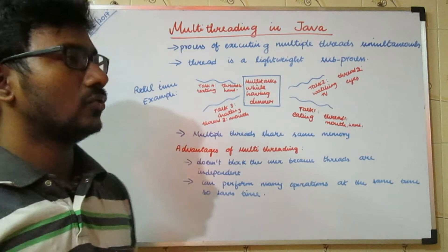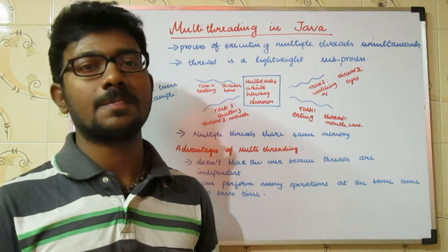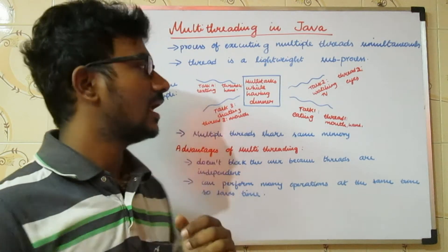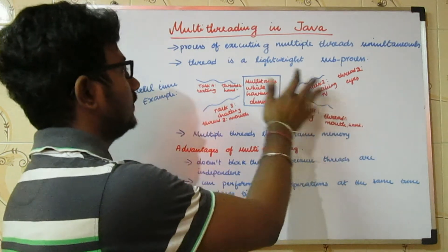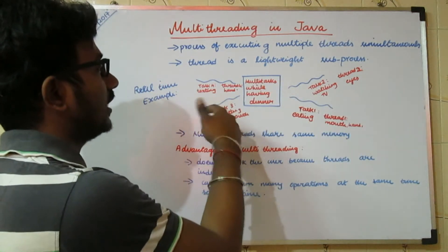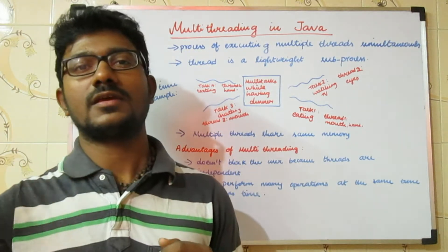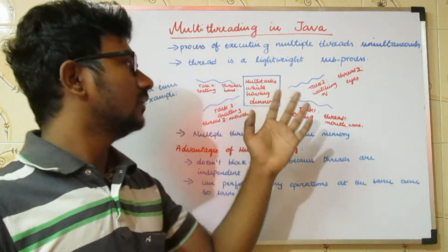This is the real-time example. Every day you would be having dinner. At that time, you would be doing multiple tasks at the same time, like eating, watching TV, chatting, and texting. Here, each thing is considered as a separate task or independent task.